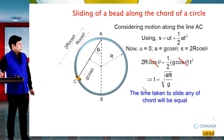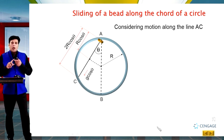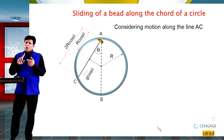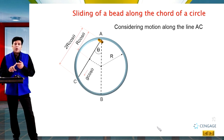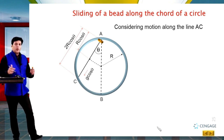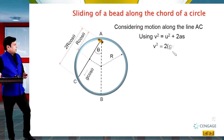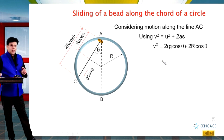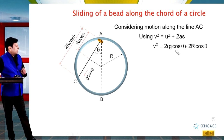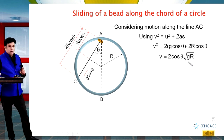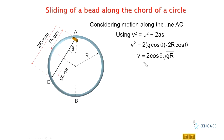Now let us find the velocity when the bead reaches point C. Initial velocity is zero, we know the acceleration g·cosθ and displacement 2R·cosθ. Using v² = u² + 2as, we substitute the values to get v² = 4gR·cos²θ. Therefore, v = 2·cosθ·√(gR). Here, √(gR) and 2 are constant, meaning v is proportional to cosθ.